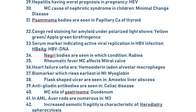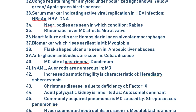Negri bodies are seen in rabies. Rheumatic fever most commonly affects the mitral valve. Heart failure cells are hemosiderin-laden alveolar macrophages. Biomarker which rises earliest in myocardial infarction is myoglobin. Flask-shaped ulcers are seen in amoebic liver abscess. Anti-gliadin antibodies are seen in celiac disease. All these 50 questions are based on your MBBS knowledge — no separate PG preparation is required for this.